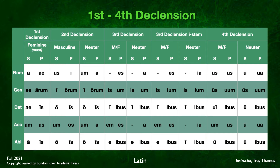Fourth declension masculine and feminine endings are identical: -us, -ūs, -uī, -um, -ū; plural -ūs, -uum, -ibus, -ūs, -ibus. Notice the macron over many of the u's except the nominative singular, which without the macron indicates it is the nominative singular case. In the fourth declension neuter, we had -ū throughout the singular and -ua, -uum, -ibus, -ua, -ibus in the plural. Hopefully you have these memorized and nailed down.